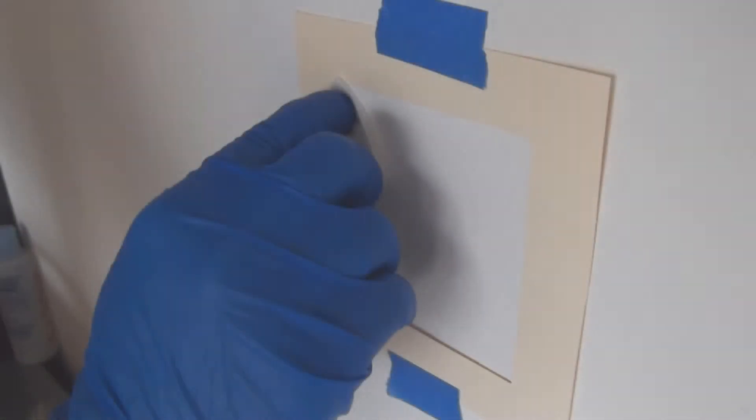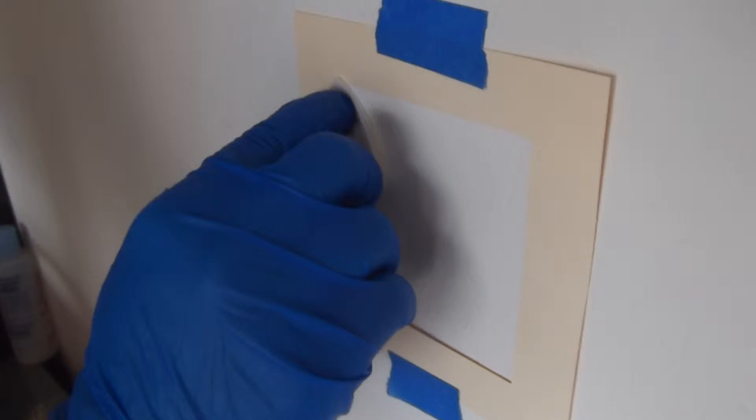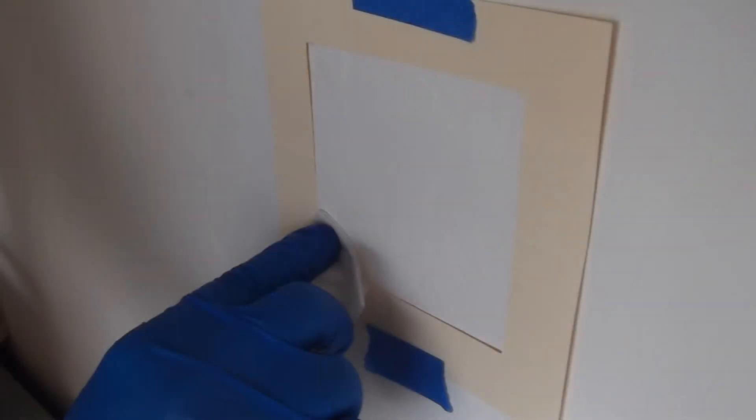Using the fresh surface of the wipe again, wipe or blot the same area at a 90-degree angle to the previous wipe pattern.